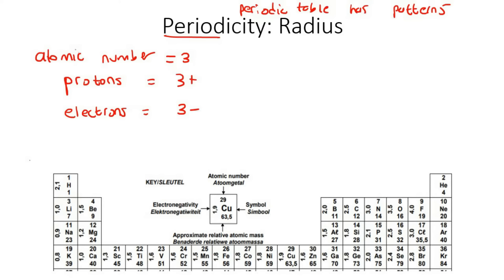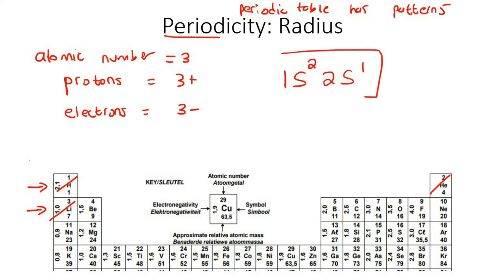If you've done this for lithium, you'd know that we start in row one and enter block S, crossing off one and two. Then we go down to the second row and start with block S, but we only cross off one electron. This is the electron configuration of lithium. If you look at the largest row number, it is row two.